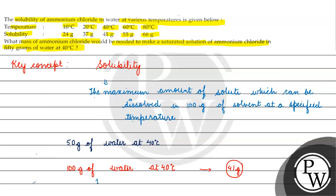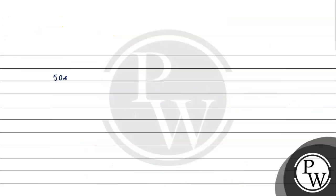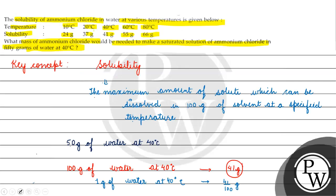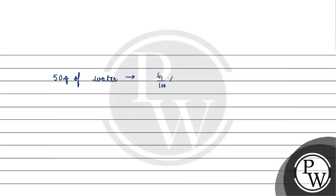For 1 gram of water at 40°C, the solubility becomes 41/100 grams. So the mass of solute required is 41/100 grams per gram of water. For 50 grams of water, the solubility becomes 41/100 × 50, which gives us 20.5 grams.